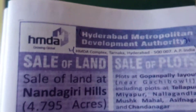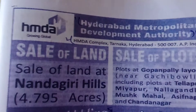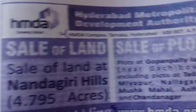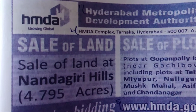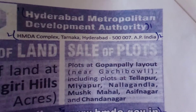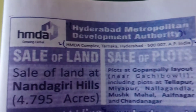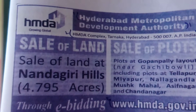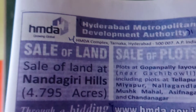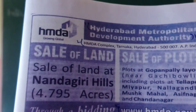In this one advertisement, they have mentioned two kinds of advertisement. First one is sale of land, and the second one is sale of plots. Only one company is giving two ways of advertisement — first one, sale of land, and second one, sale of plots.